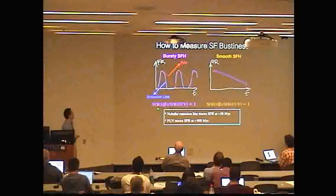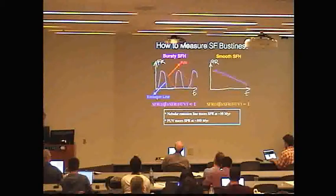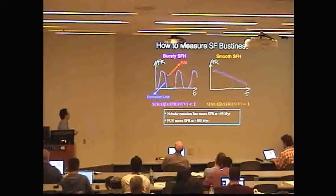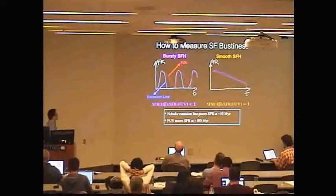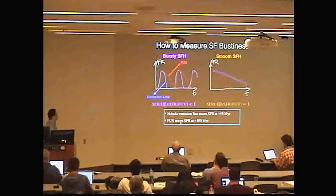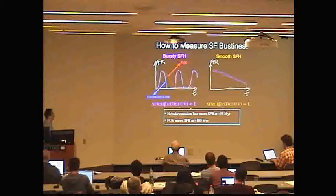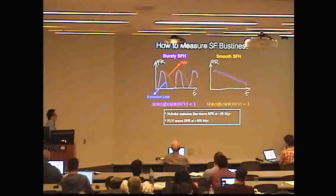The question is: how do we measure star formation burstiness? We use the ratio of the star formation rate measured from H-beta to the star formation rate measured from FUV. If you have a sample of bursty star-forming galaxies, you have many chances to observe times when the emission line luminosity is going down because of temporary quenching, while the FUV luminosity is still relatively high. That's because nebular emission lines trace star formation on a timescale of 10 million years, while FUV traces star formation on a much longer timescale of about 100 million years. For a bursty sample, the average ratio of H-beta SFR over FUV SFR would be less than one, whereas for a smooth star formation history the ratio would be close to one.